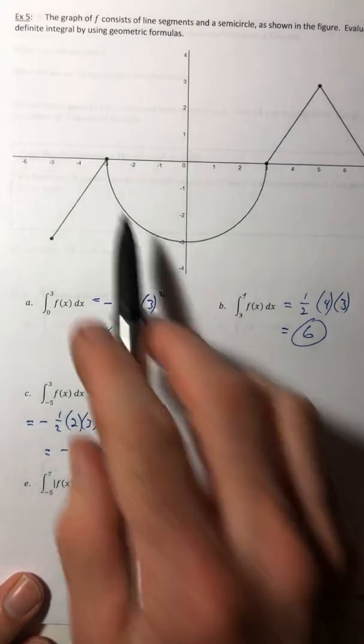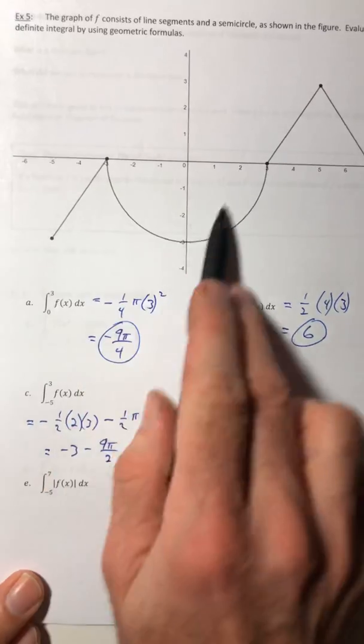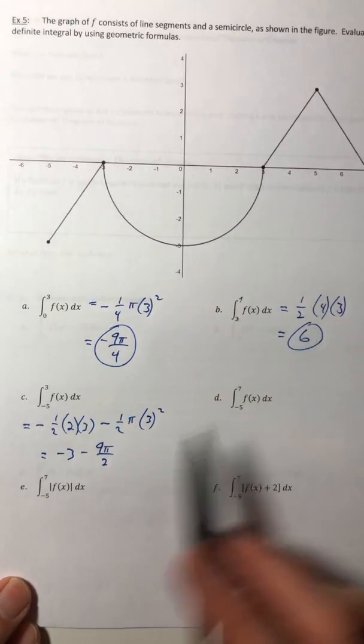Okay, so for D, you just got to get the area of all of these. This stuff would be negative, anything above would be positive, and just combine them.